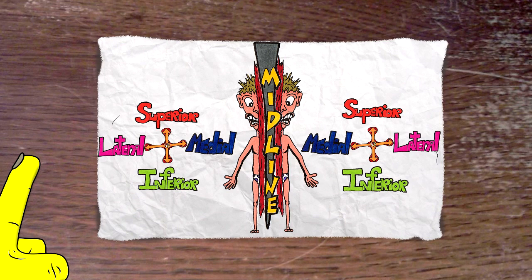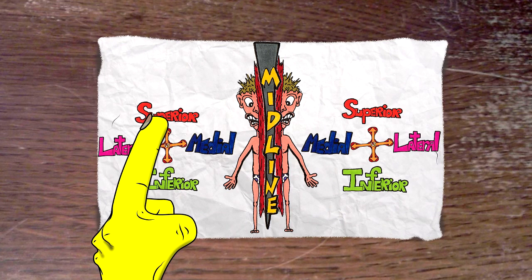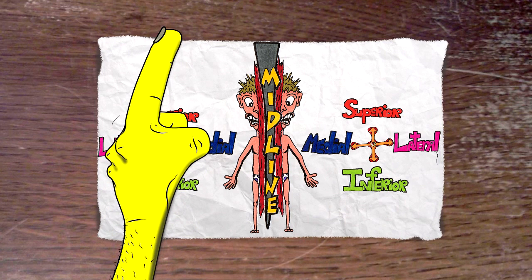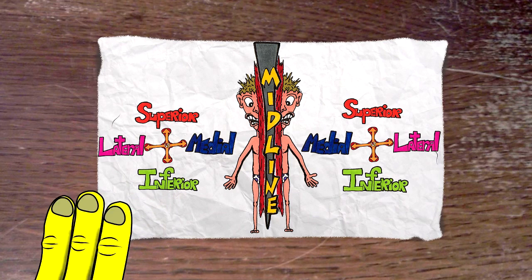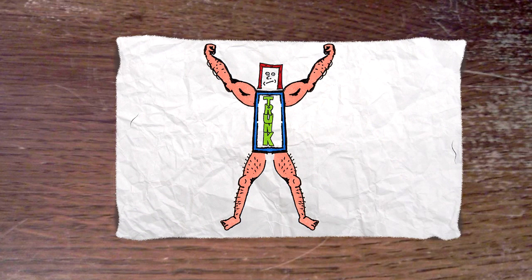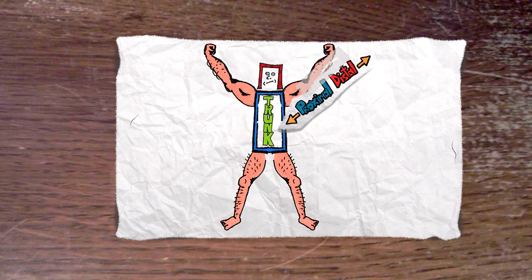Then we have what's basically north and south. You have superior, which refers to something that is above another structure, and inferior, which refers to something that is below another structure. We also have special terminology used to describe locations on the extremities: proximal, which means towards the trunk of the body, and distal, which means away from the trunk of the body.